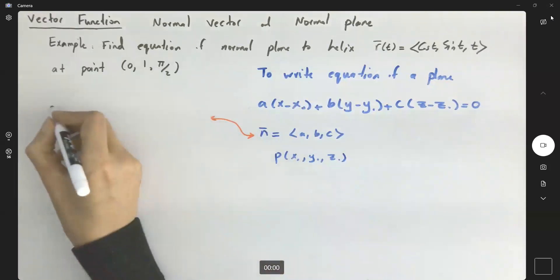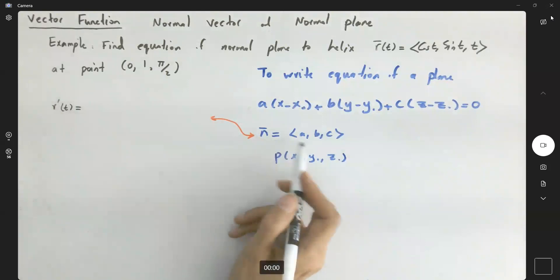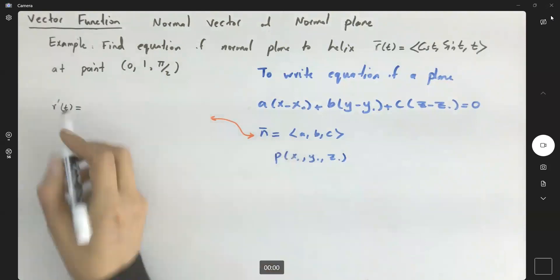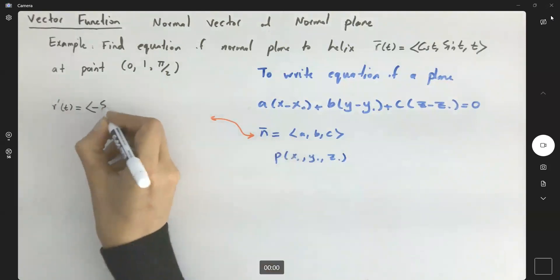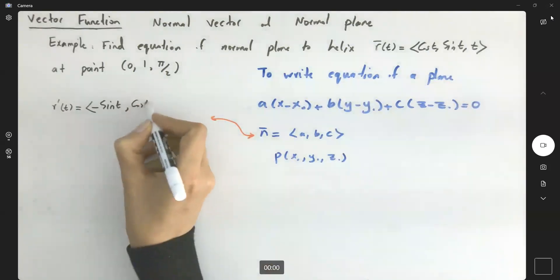In that case, r'(t) is equal to—it doesn't have to be a unique normal vector—r'(t) is ⟨-sin t, cos t, 1⟩. The derivative of sine is cosine t, and the derivative of t is just one.